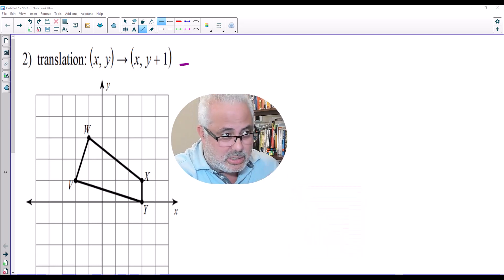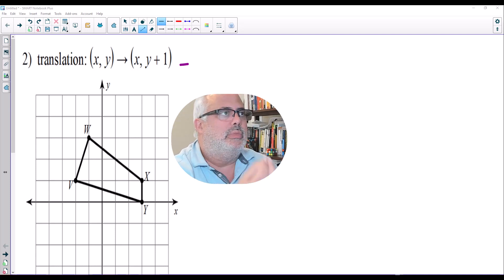The rule is simple. It's (x, y), which is the pre-image, which is every vertex, and we have to transform that. We have to translate that y plus one. What is the meaning of y plus one? One unit up.